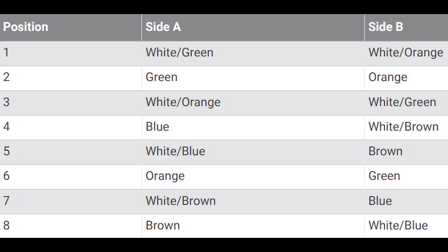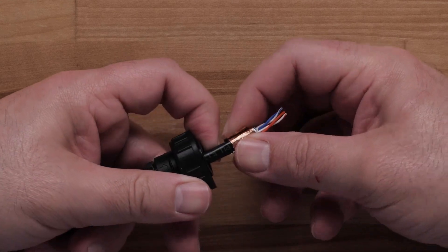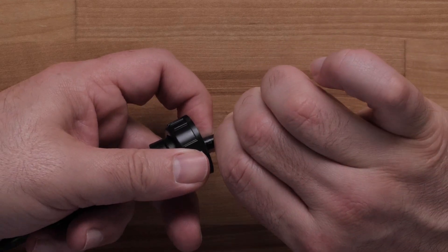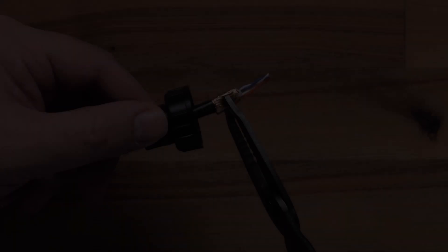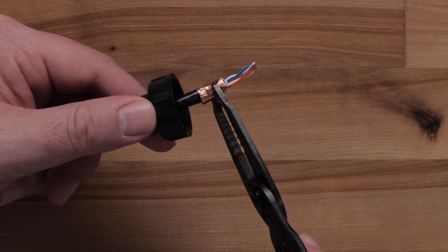Arrange the wires in order according to the Side A column. Wrap the supplied copper tape around the drain wire and jacket. Use the pliers to squeeze the copper tape to pre-form the cable jacket end.